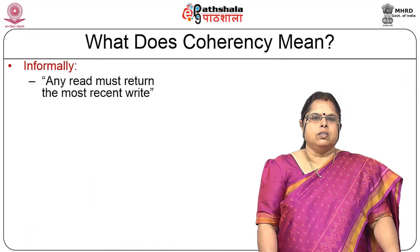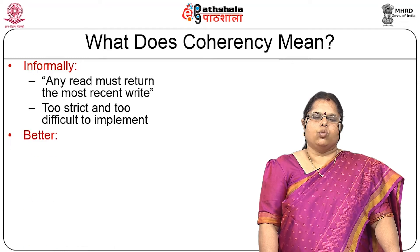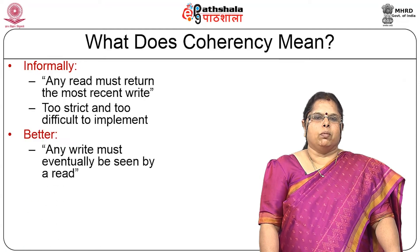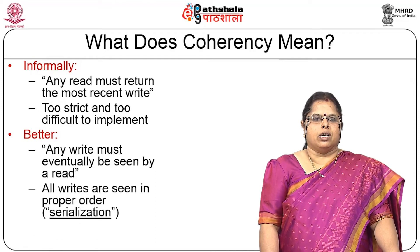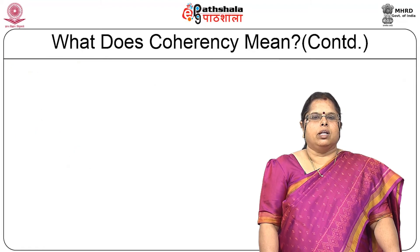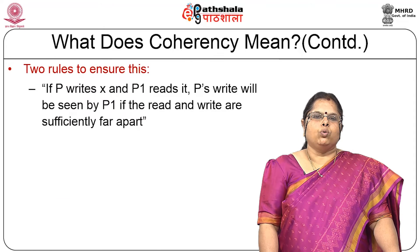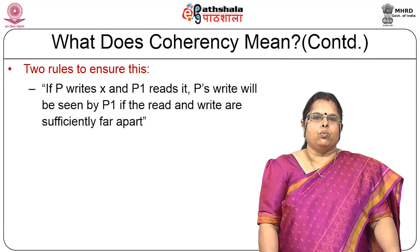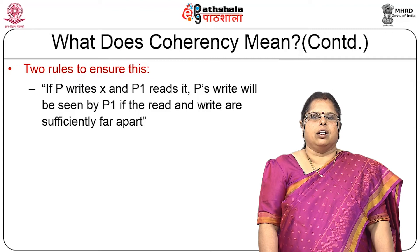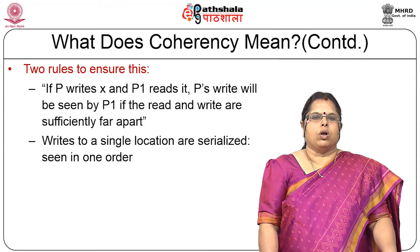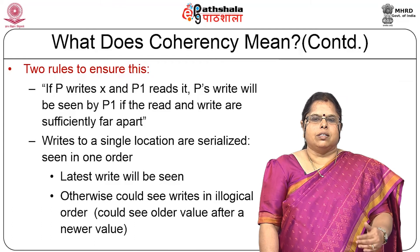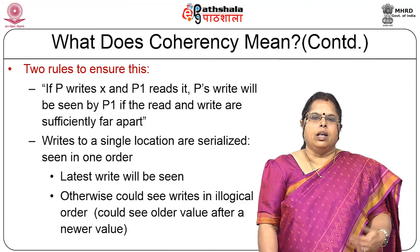Informally, coherence means any read must return the most recent write — but that is too strict and too difficult to implement. A better formal definition: any write must eventually be seen by a read, and all writes should be seen in proper order — the serialization problem. Two rules ensure this: if processor P writes x and P1 reads it, P's write will be seen by P1 if the read and write are sufficiently far apart; and writes to a single location are serialized — seen in one order, with the latest write seen last.